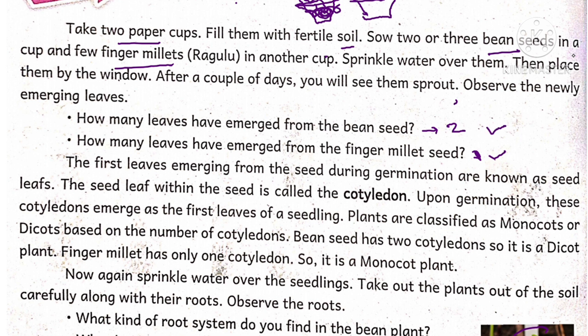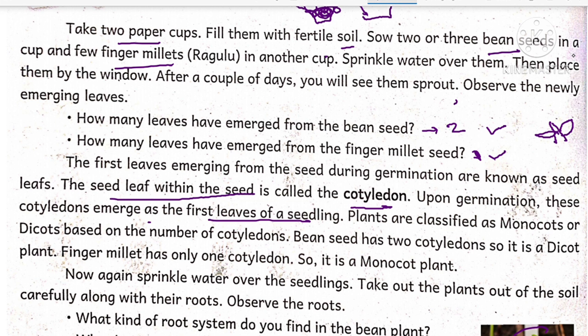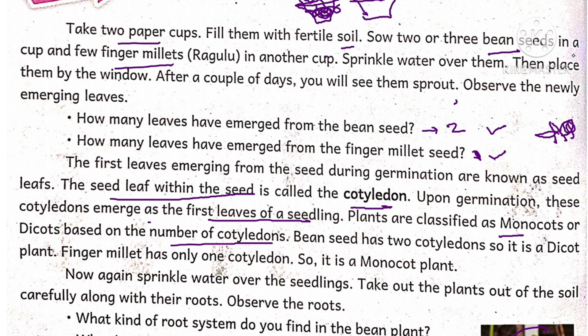The first leaves emerging from the seed during germination are known as seed leaves. Whenever the bean plant grows, it will give two leaves, and these two leaves are called seed leaves. The seed leaf within the seed is called a cotyledon. Upon germination, these cotyledons emerge as the first leaves of a seedling. Plants are classified as monocots and dicots based on the number of cotyledons.